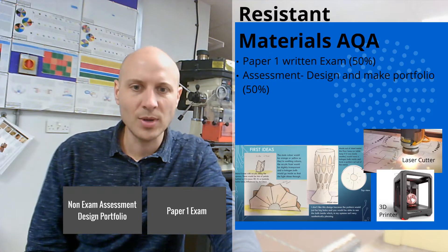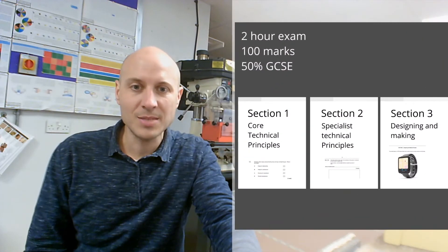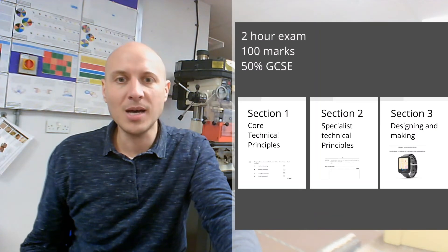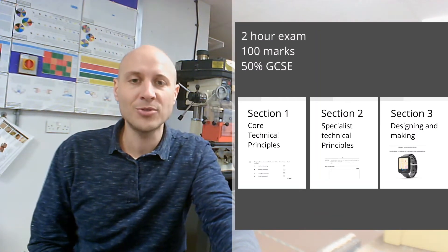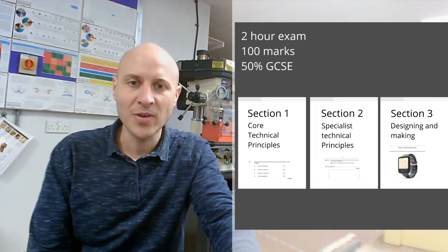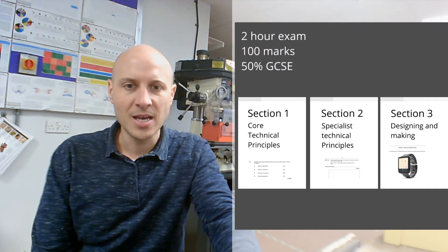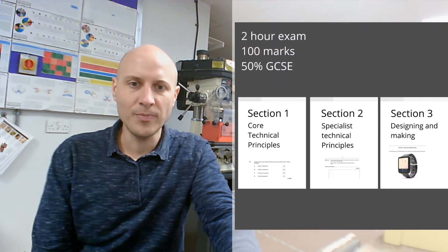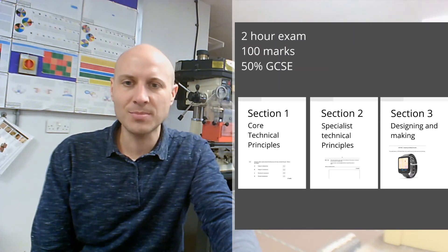So we'll take a quick look at the Paper 1 exam. It's split into three parts. It's two hours, worth 100 marks, and worth 50% of the GCSE. Section 1 looks at core technical principles, with various questions on design technology.